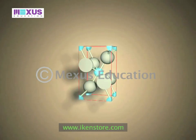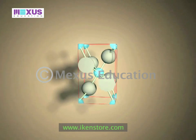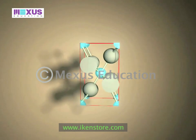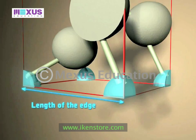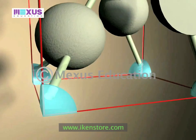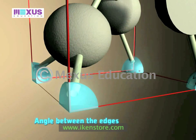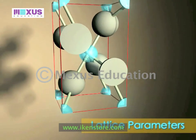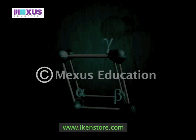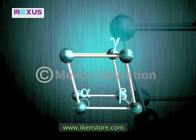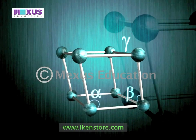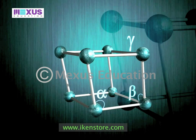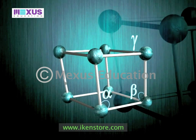A unit cell contains one or more atoms. The lengths of the edges of a unit cell and the angles between them are known as lattice parameters. Crystal structures can be classified on the basis of their lattice systems.